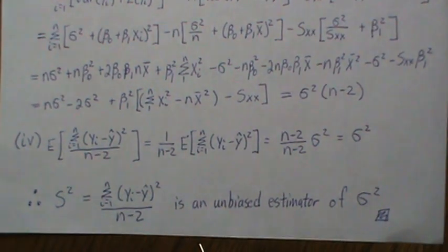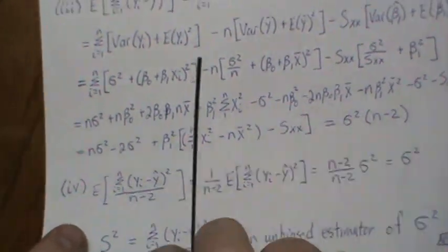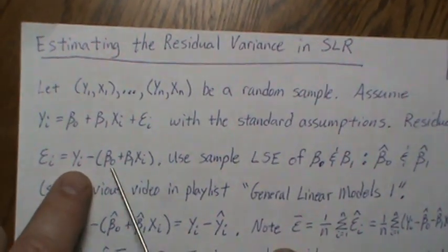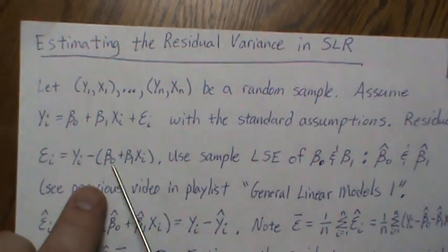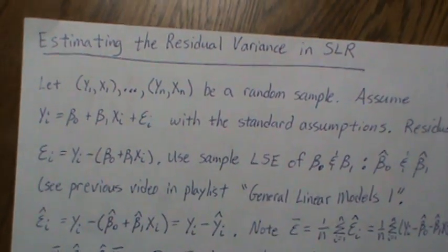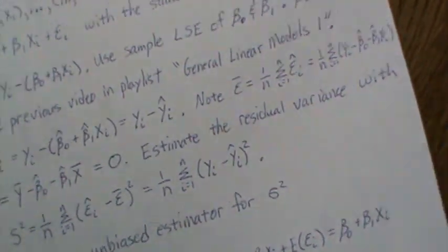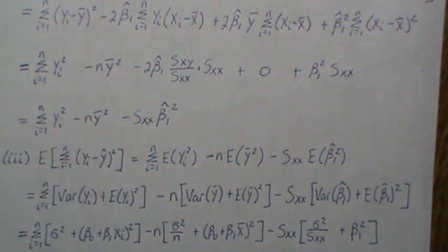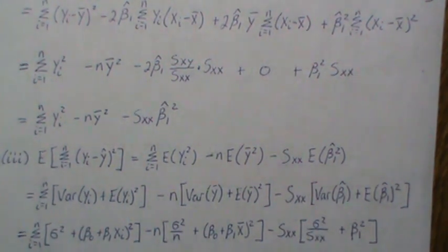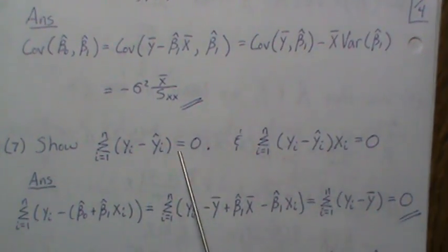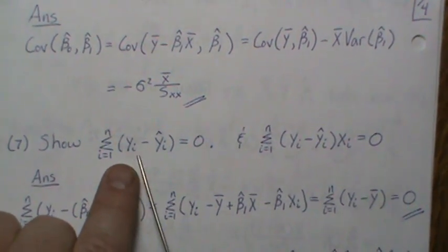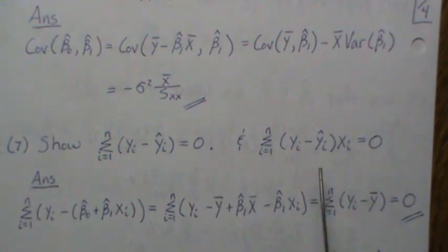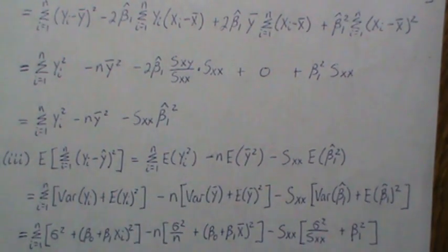The general rule for what to divide by is: how many parameters are you estimating? We had to estimate beta zero and beta one — that's two parameters, so we divide by n minus 2. Equivalently, there are two restrictions on the residuals: from a previous video, we showed that the sum of the residuals equals zero and the sum of xi times the residuals equals zero. Those two restrictions account for the minus two.